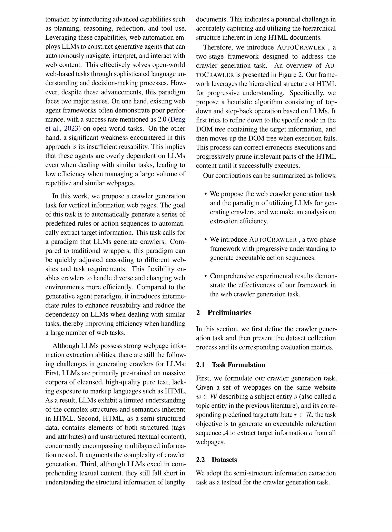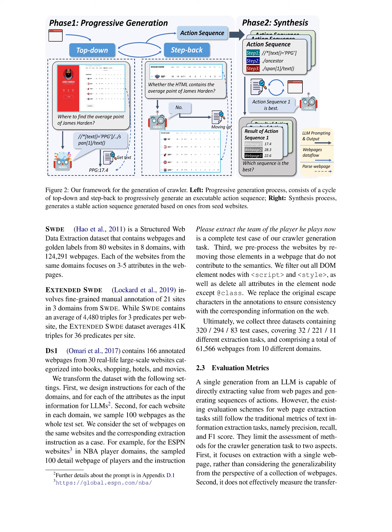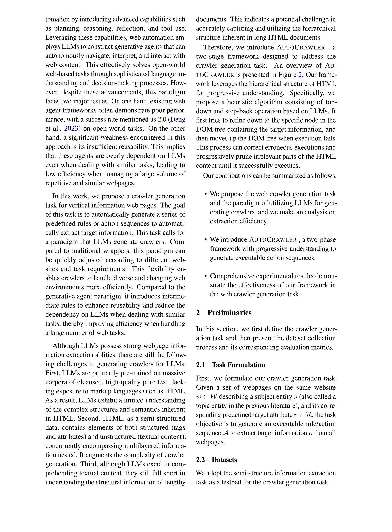Ninth, over-reliance on LLMs: existing web automation frameworks heavily rely on LLMs for various tasks, leading to inefficiencies and a lack of reusability, especially when dealing with similar tasks. Tenth, inefficiencies in handling open-world tasks: while LLMs offer advanced capabilities for web automation, existing frameworks struggle with poor performance on open-world tasks and lack reusability, highlighting the need for more efficient and adaptable approaches in crawler generation tasks.